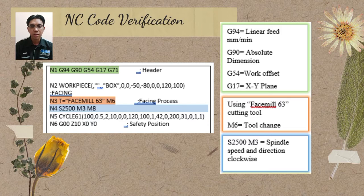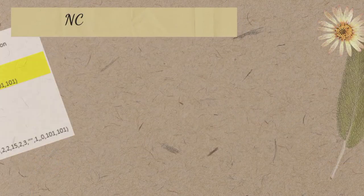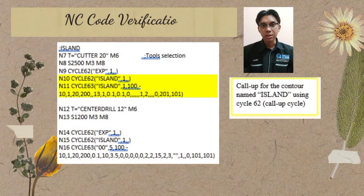The next highlight is the tool selection, showing what kind of tools we are going to use. Then, the blue highlight shows the speed of the spindle and direction of the tools that will cut, which is clockwise, included with a cooling activation. The yellow highlight shows the contour name 'island' that has been made in the contour milling features.